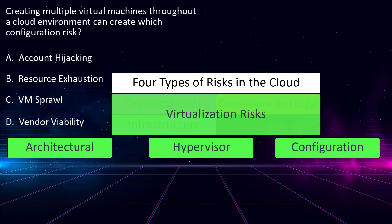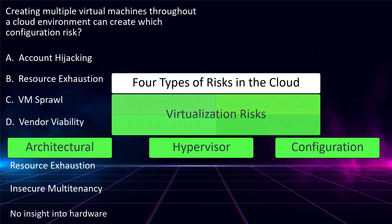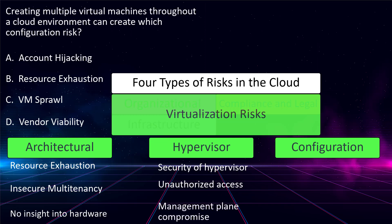Architectural risks include resource exhaustion, insecure multi-tenancy — especially between hosts on the same hypervisor but with different trust levels — and the inability to monitor all virtualized traffic given the underlying hardware system, because the cloud service provider will never let you, the cloud tenant, look at their underlying hardware. You only get access to the virtualized environment. Hypervisor risks include the security of the hypervisor itself, which may have exploitable vulnerabilities if not managed properly with updates and general housekeeping, unauthorized access to the hypervisor — addressed through access control and identity management — or a management plane compromise that would render control over the hypervisor itself.